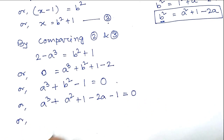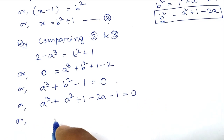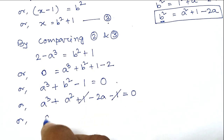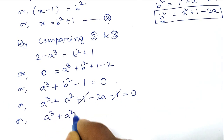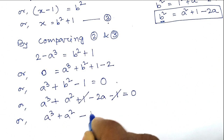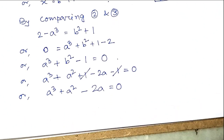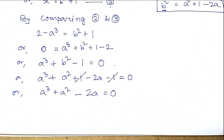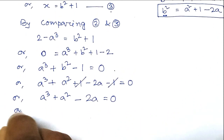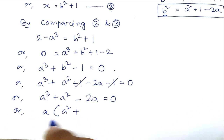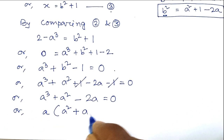The 1 and minus 1 cancel out, so we get a cubed plus a squared minus 2a equals 0.